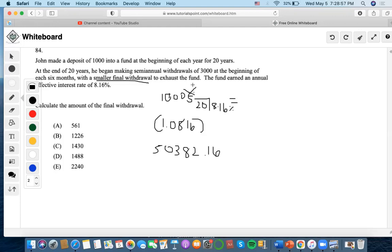Now we're going to set this equal to, at the end of 20 years, he makes semiannual withdrawals of 3,000. So this is going to be the regular balloon slash drop payment formula. So it's going to be 3,000 at the beginning of six months. We're going to make this an annuity due. It's occurring every six months. So it's going to be semiannual thing. So I'm going to take the effective interest rate.